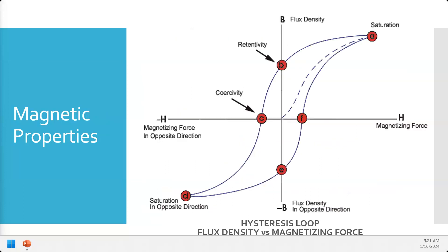We can look at these properties in a hysteresis curve graph. A part that's not magnetized starts at the origin. When we apply a magnetizing force — in our case, running electrical current through the part — the flux density increases in a logarithmic, decaying exponential curve. You can also magnetize by bringing a powerful magnet near another piece of material; one magnet can magnetize another material.